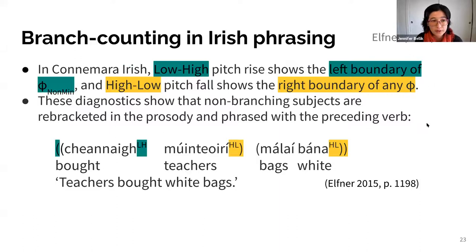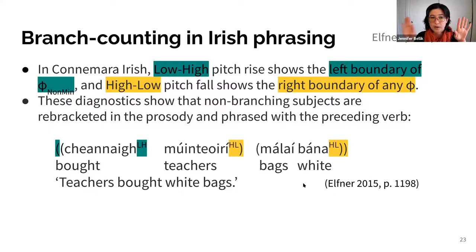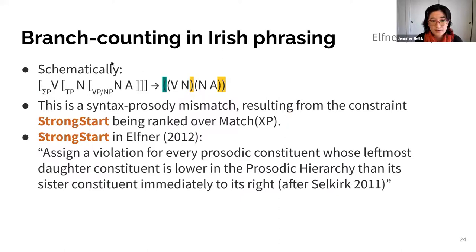I'll present Irish data taken from Emily Elfner's work. In Connemara Irish, a low-high pitch rise shows the left boundary of a non-minimal phi — a phi that contains some other phi — and a high-low pitch fall shows the right boundary of any phi. These diagnostics show that non-branching subjects are re-bracketed in the prosody to be phrased with the preceding verb. Irish is a verb-subject-object language, so the verb precedes the subject. In this example — 'bot teachers bags white' — bot and teachers are phrased together. Schematically, the syntax has a right-branching structure but the prosody gets a balanced branching structure, representing a syntax-prosody mismatch.